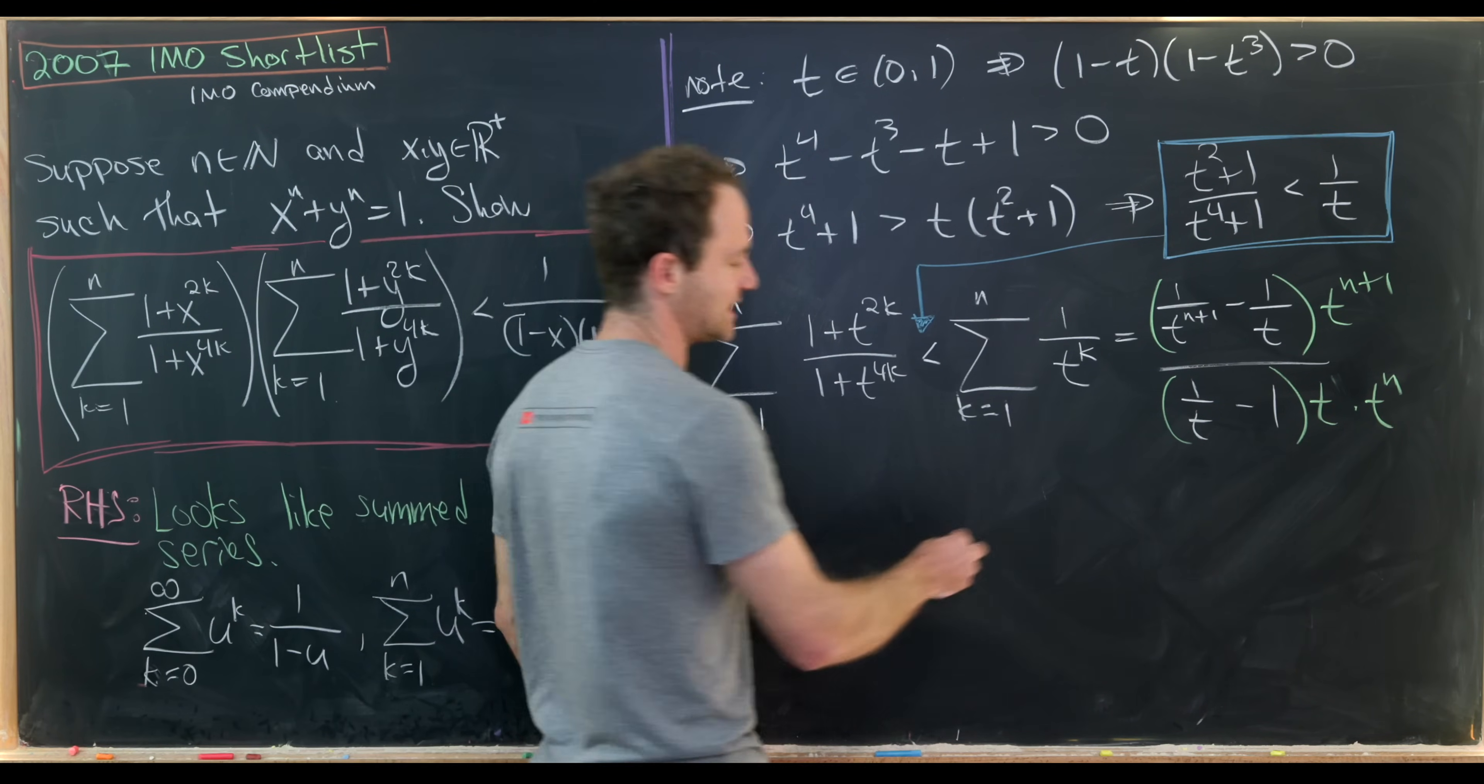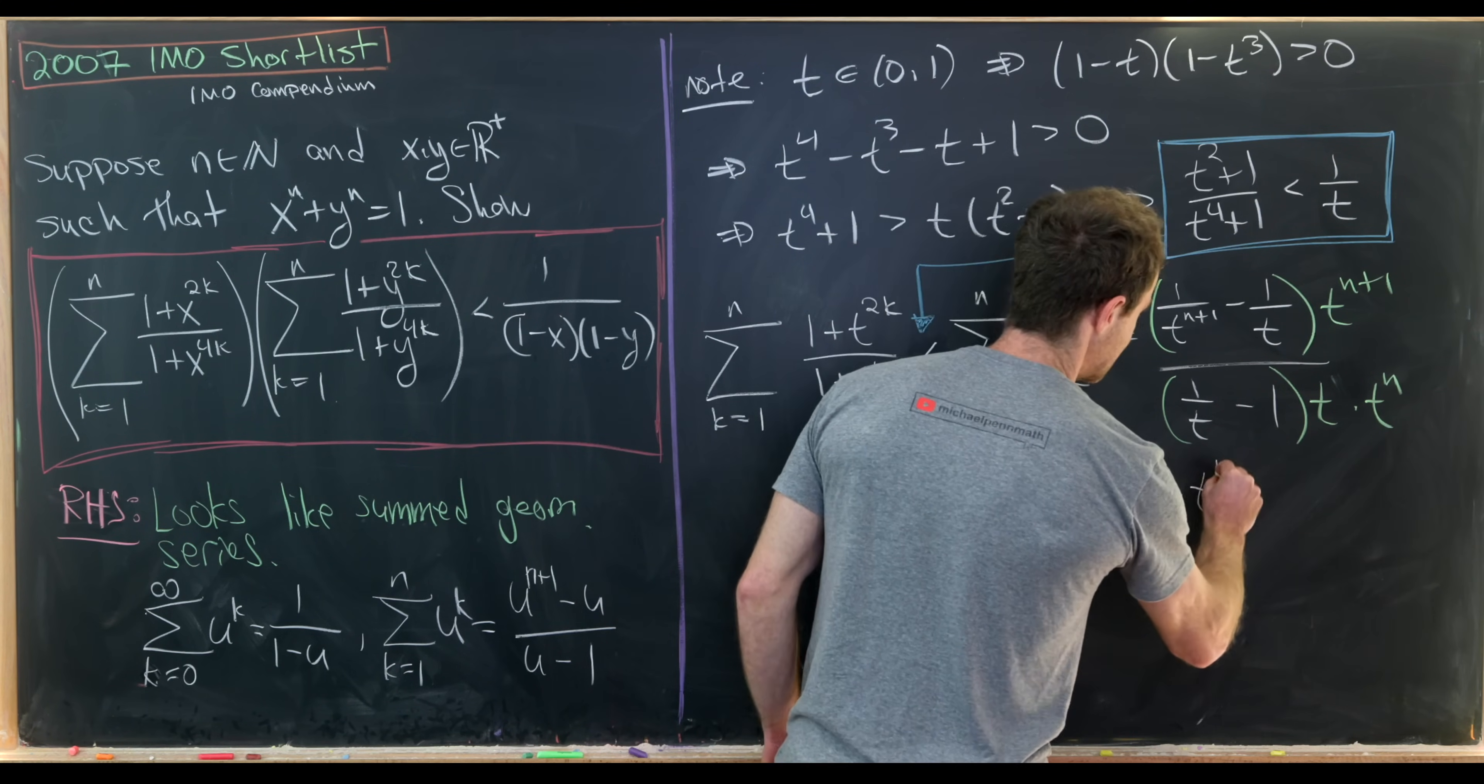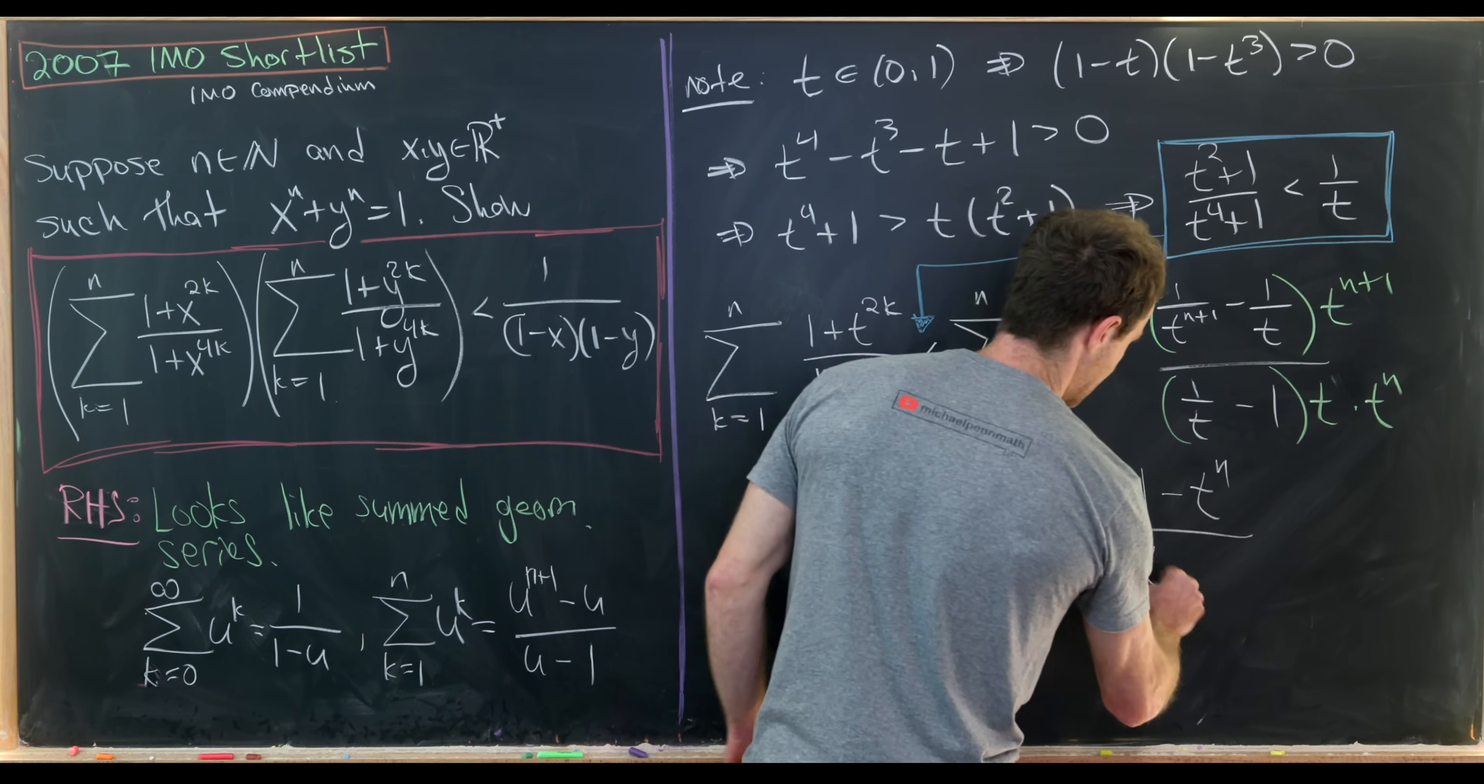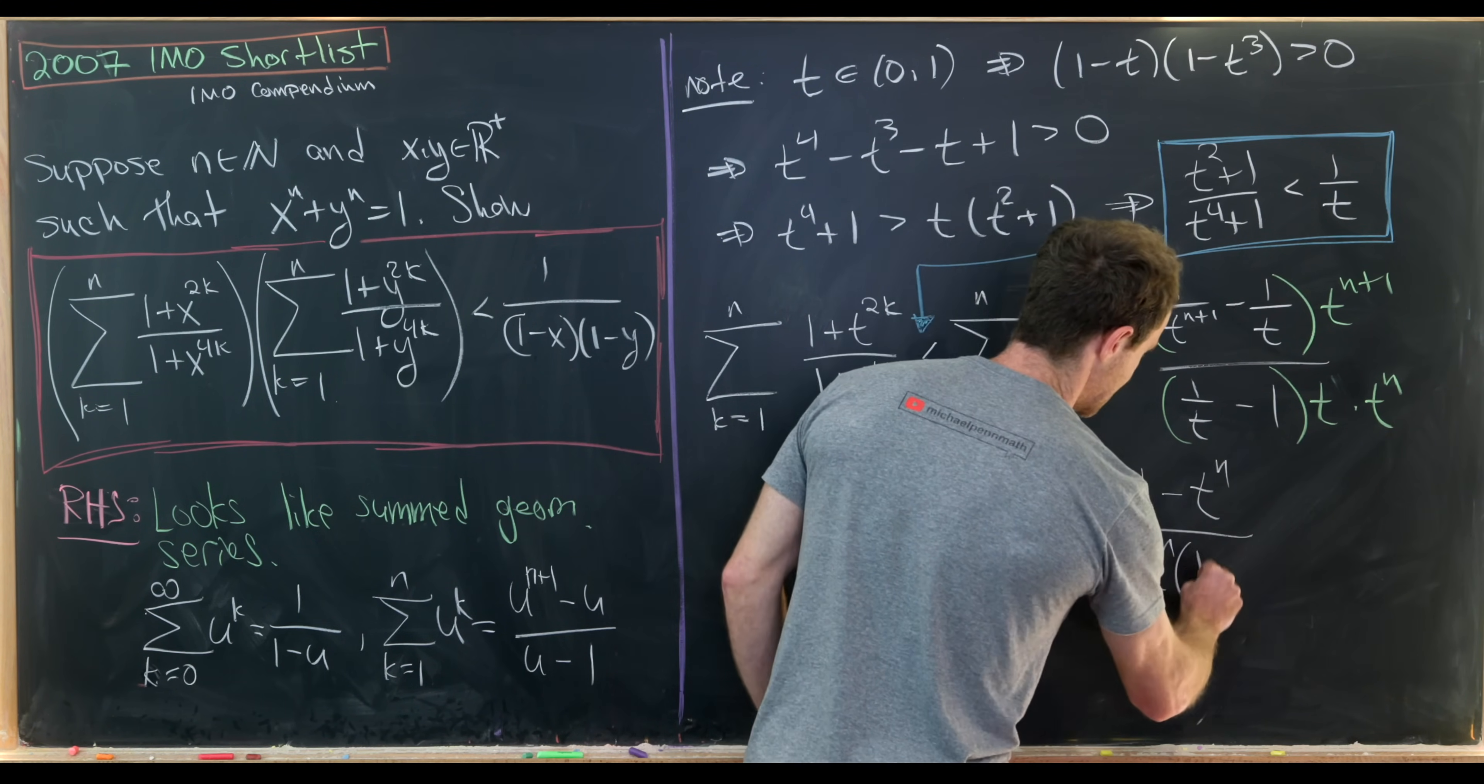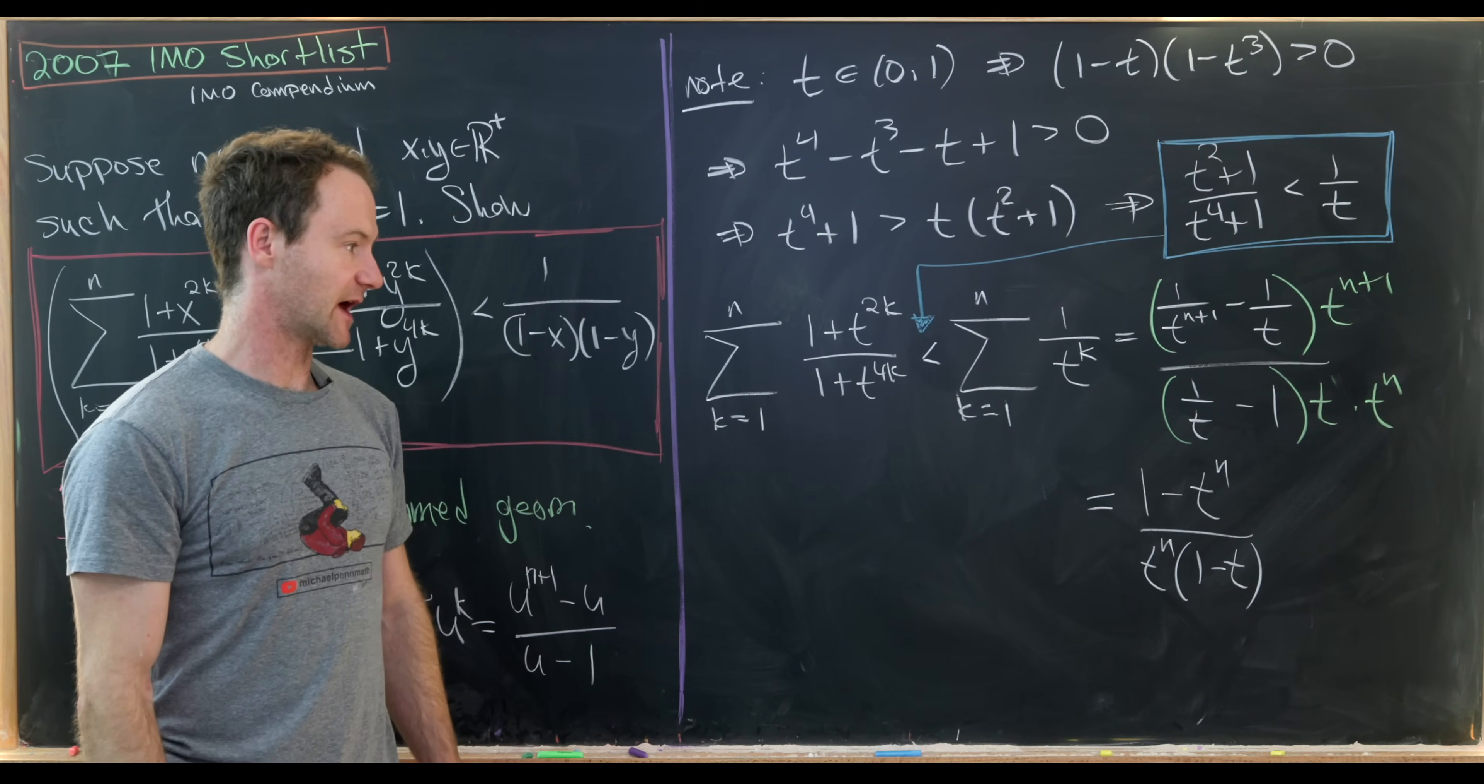Okay, so let's see what that leaves us with. So we'll have 1 minus t to the n in the numerator. Then in the denominator, we'll have t to the n and then 1 minus t. So we'll have something like that.